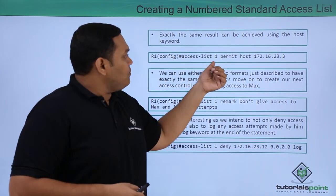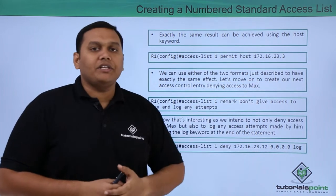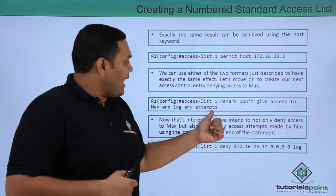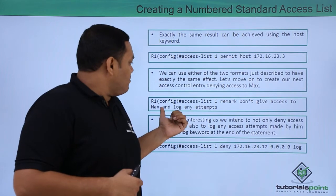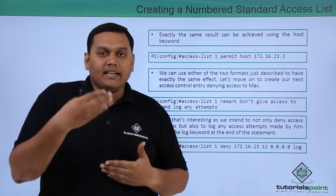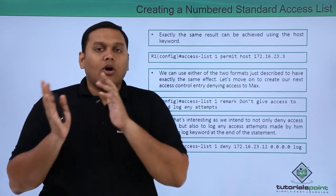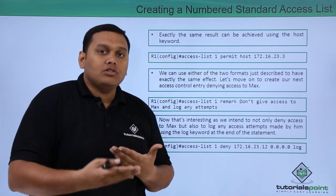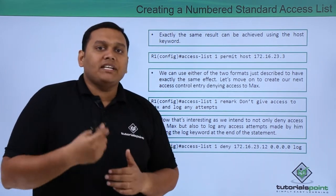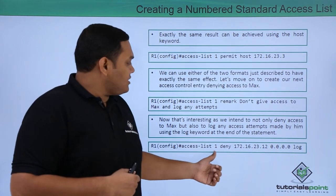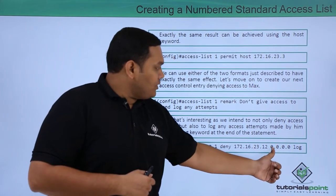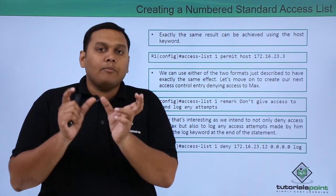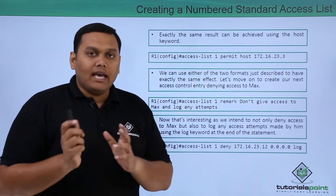If you want to block Max and log any attempts, you first add a remark: 'access-list 1 remark don't give access to Max, log any attempts.' Then you add the deny entry: 'access-list 1 deny [Max's IP] [wildcard mask] log' — so the router logs every time Max attempts to gain access.